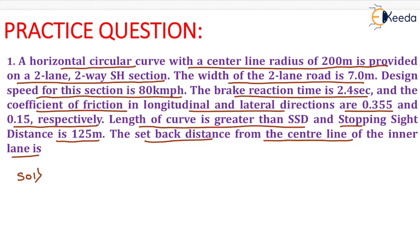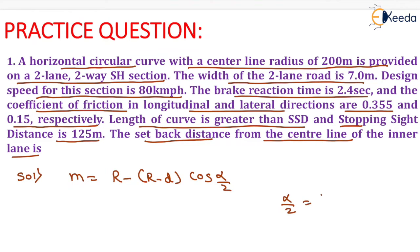When the length of curve is greater than stopping sight distance in case of a two-lane road, the setback distance formula is: m = R minus (R minus d) into cos(α/2). For the α/2 calculation, the formula is: α/2 = 180 × S divided by (2π × (R minus d)).